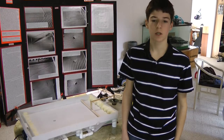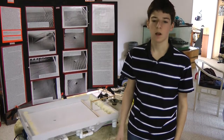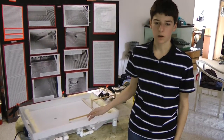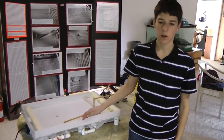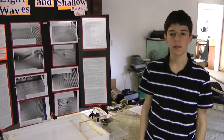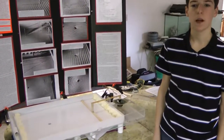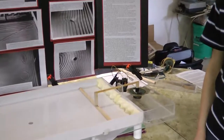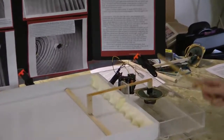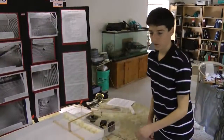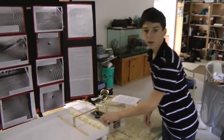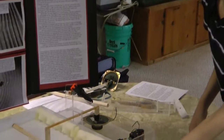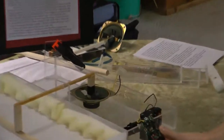To experiment with shallow water waves, we need to build a large shallow aquarium. To generate the wave, we need an emitter which moves up and down or back and forth and creates the wave. The emitter is driven by a variable frequency pulse generator.